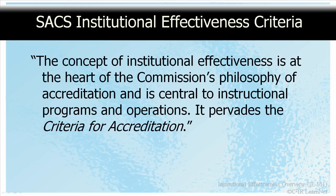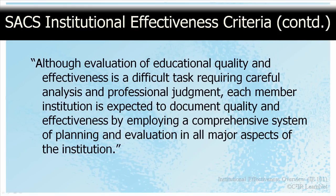The criteria were replaced in 2001 and 2002 by the Principles of Accreditation, a new set of accreditation requirements which places the same emphasis on institutional effectiveness as the older criteria, which we will discuss later in this module. As noted in the preamble to section three of the criteria, the concept of institutional effectiveness is at the heart of the Commission's philosophy of accreditation and is central to instructional programs and operations — it pervades the criteria for accreditation. Each member institution is expected to document quality and effectiveness by employing a comprehensive system of planning and evaluation in all major aspects of the institution. The Commission advocates no single interpretation of the concept of institutional effectiveness, but expects each member institution to develop a broad-based system appropriate to its own context and purpose, employ a variety of assessment methods, and demonstrate use of results for the improvement of both educational programs and support activities.